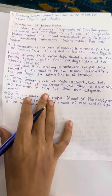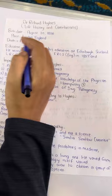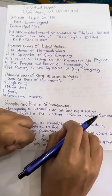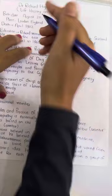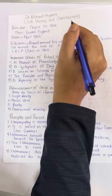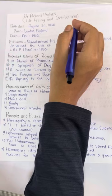In this video, we understood about the life history of Richard Hughes: his birth date, place, death anniversary, education, the important works of Dr. Richard Hughes, his concept of administration of drugs, the important points from Principles and Practice of Homeopathy, and his different contributions. These are all the things you need to understand about Dr. Richard Hughes. If you want to understand the life history of other doctors like Dr. Kent, Boenninghausen, Boger, and William Boericke, those videos are already uploaded — you can check them in the playlist. If you find this YouTube video useful, do not forget to like, share, comment, and subscribe to my YouTube channel. Keep learning, keep sharing. Thank you and have a nice day.